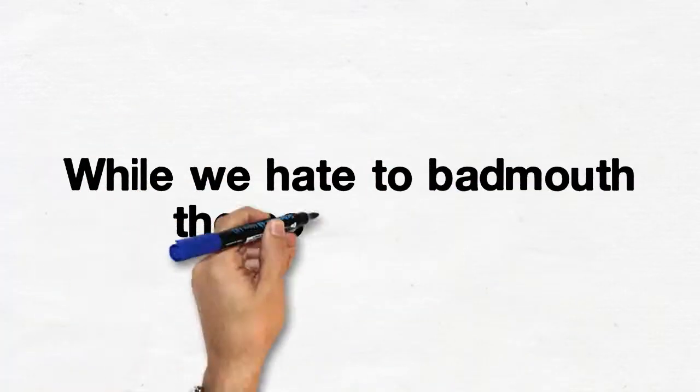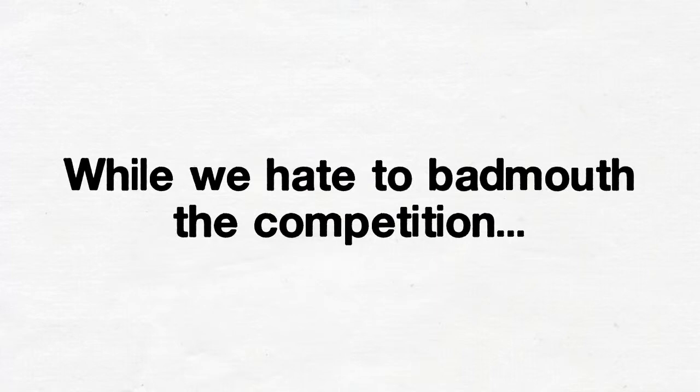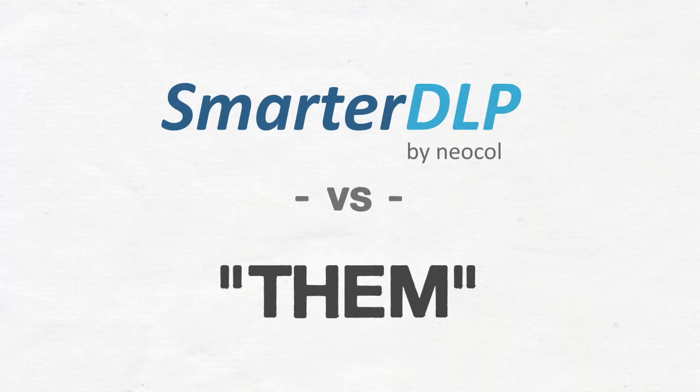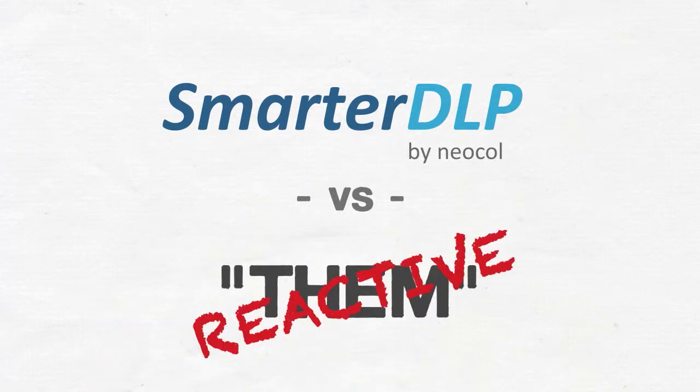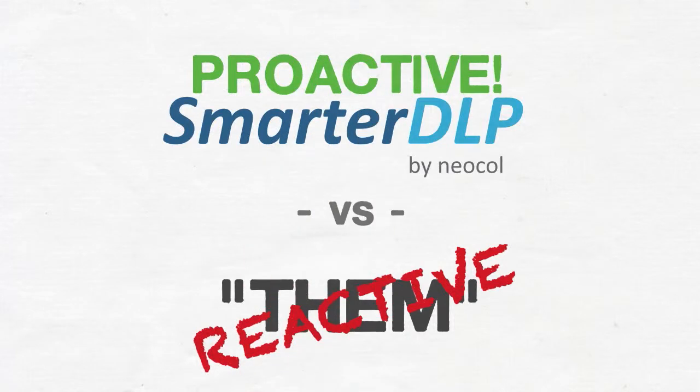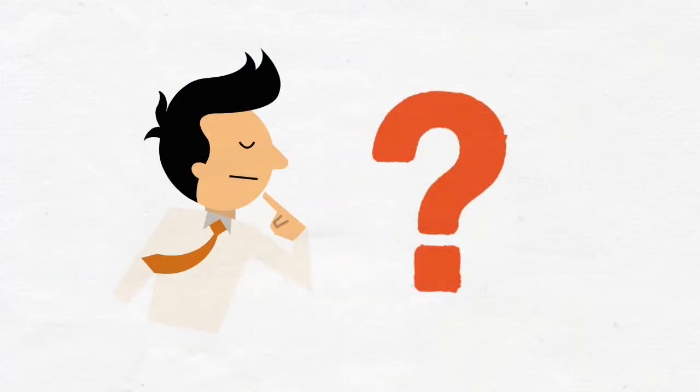While we hate to badmouth the competition, we do feel responsible to let you know that we can sum up the difference between us and them in one sentence. Other solutions are reactive, while Smarter DLP is proactive. Which position do you want to empower your organization to be in? Prevention or damage control?